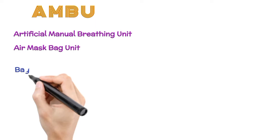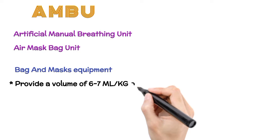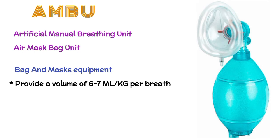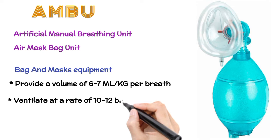A tidal volume of 6 to 7 milliliters per kilogram per breath is used, approximately 500 milliliters for an average adult. For a patient with a perfusing rhythm, ventilate at a rate of 10 to 12 breaths per minute.